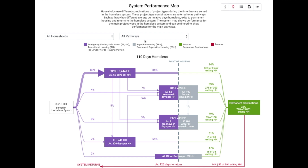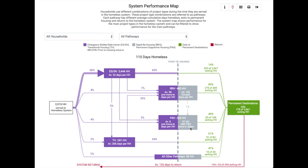Looking at this map of your full system, you are able to see every type of intervention, what percentage of households move through each service type, and how the households in your system move towards permanent housing. For example, some households may have a stay in emergency shelter, then move directly to rapid rehousing. Others may move from an emergency shelter project into a permanent supportive housing project. The sequence of movement through these available interventions is called a service pathway. Each service type box includes a figure for the total number of households served by that intervention — including those served only by that intervention as well as those served by it as part of another pathway.